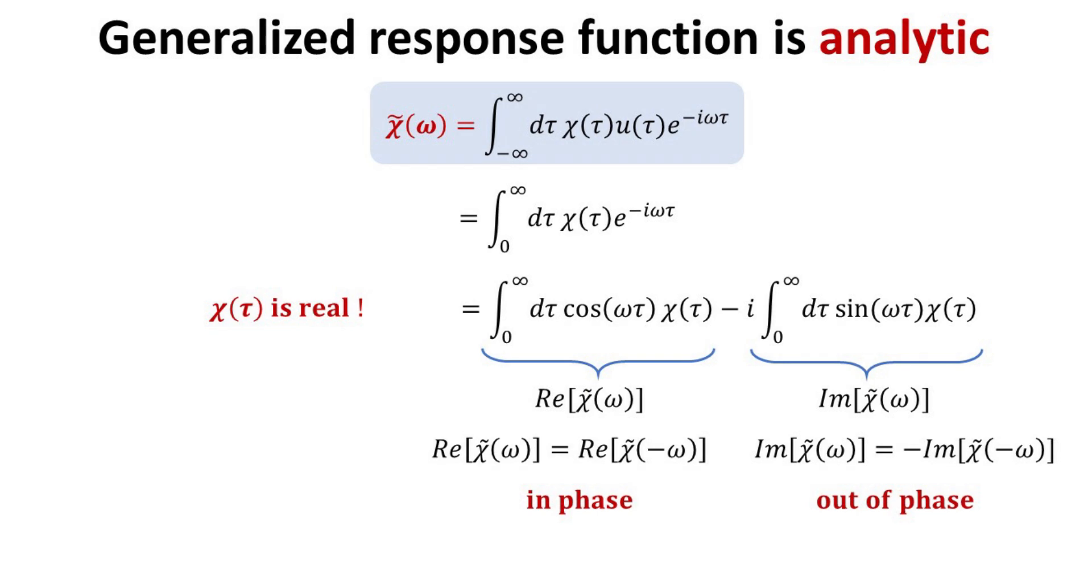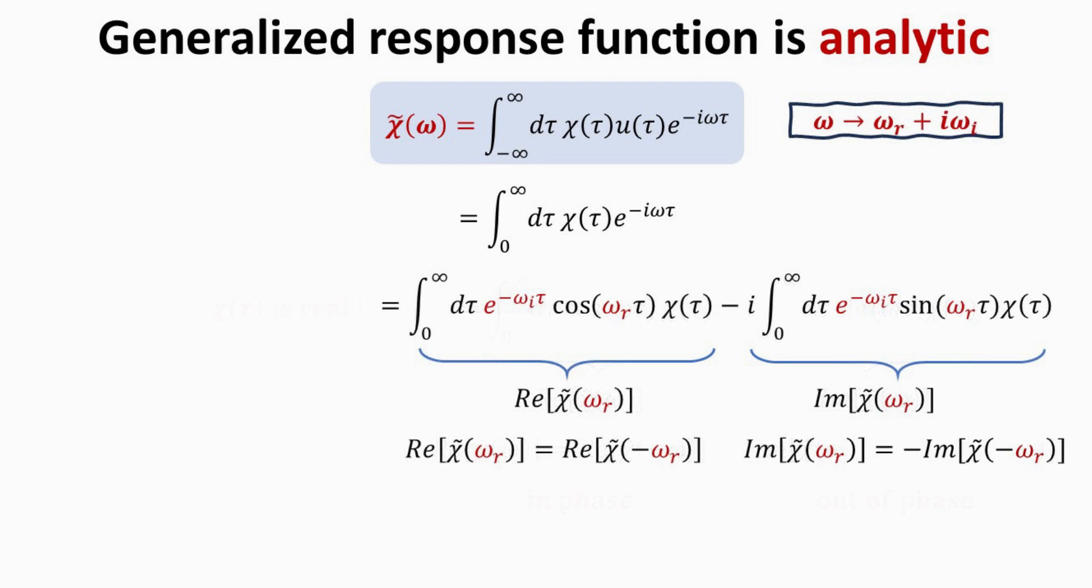From an electrical circuit analogy, the real part is like the resistor which produces an in-phase response, while the imaginary part is a reactive one producing an out-of-phase response. We can further generalize our result for complex omega, where omega r and omega i denote the real and imaginary part, respectively. We can check that the symmetry relations hold with respect to omega r.